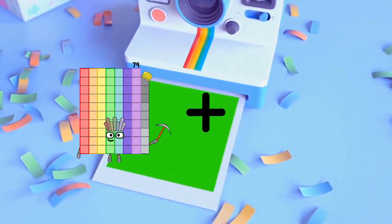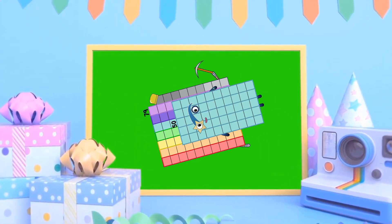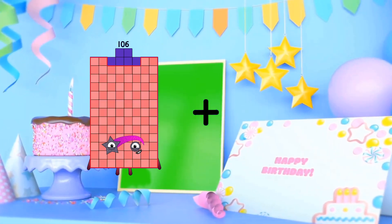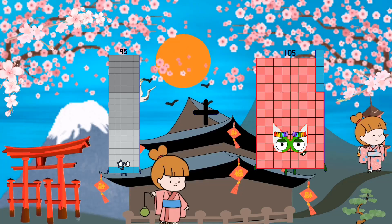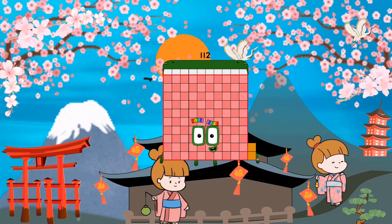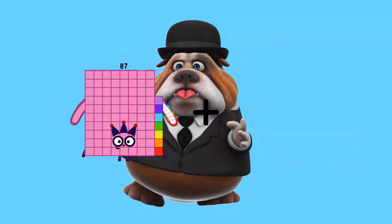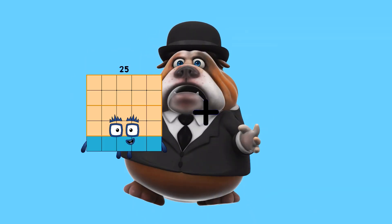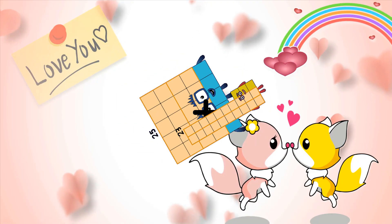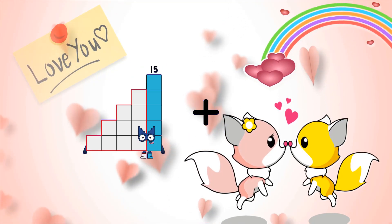79 plus 50 equals 129. 95 plus 17 equals 112. 50 equals 9. 90 plus 40 equals 90.